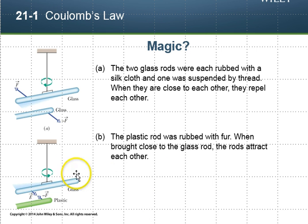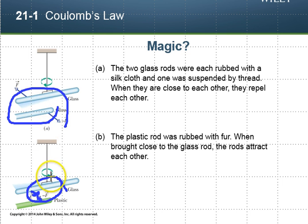If we then do this slightly different experiment, where we rub a plastic rod with fur, the plastic rod and the glass rod actually attract each other and move towards each other, as represented by these little arrows right here that you may or may not be able to see.